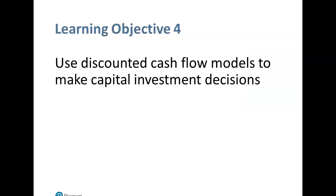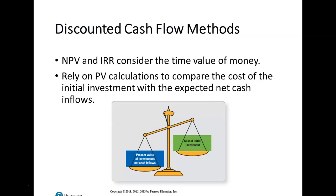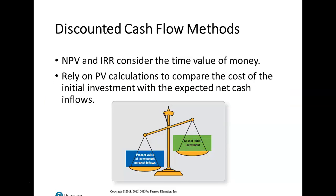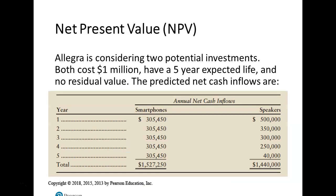Discounted cash flows help make capital investment decisions. We're trying to determine what our cash flow would be for a capital asset we're purchasing. What is the value of the cash flows I expect to receive in real dollars? When we convert it to a net present value, we're taking a future value and discounting it back to now to get an idea of what its value is — what we want to know about future flows of money and how those numbers look right now. That's the discounted net present value calculation.